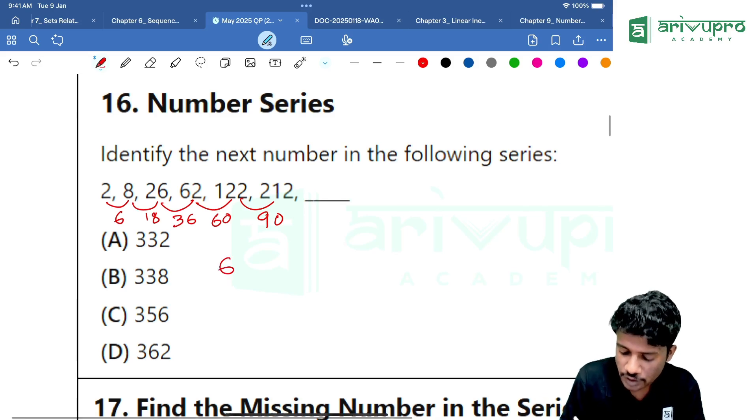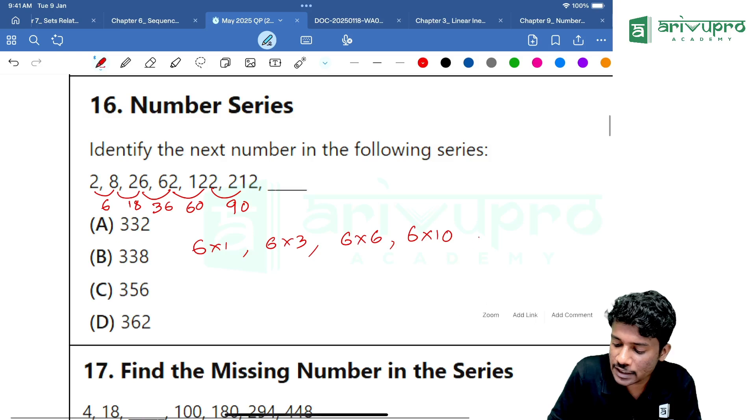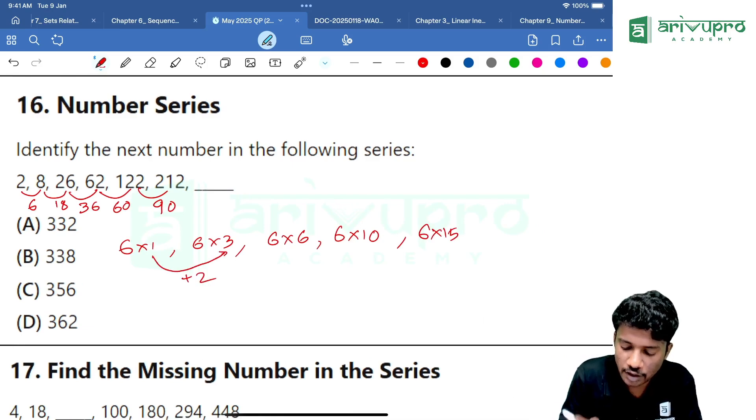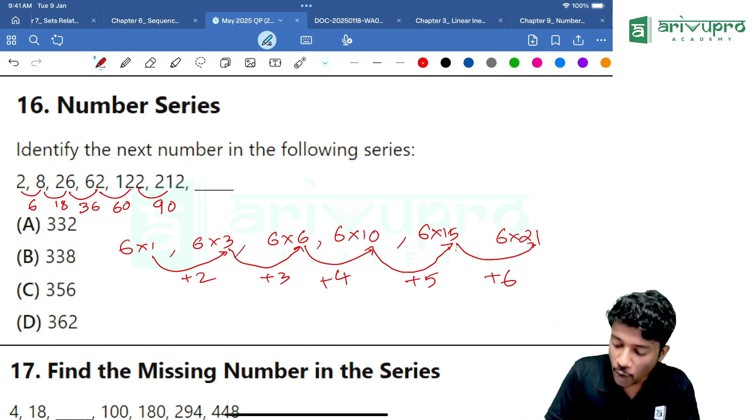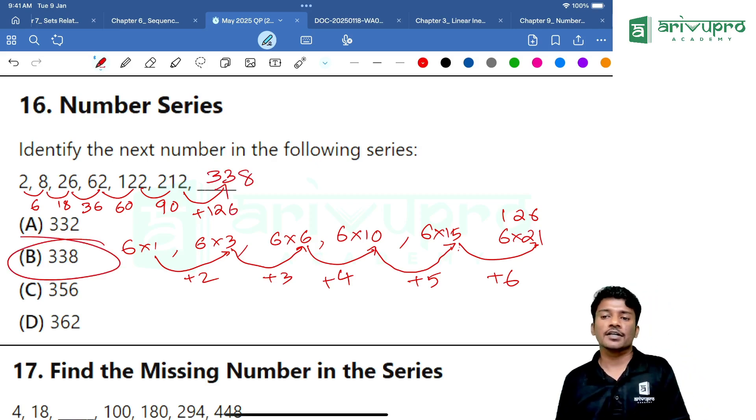We can write 6 as 6 into 1, then 18 as 6 into 3, then 36 is 6 into 6, then 60 is 6 into 10, then 90 is 6 into 15. 1 is becoming 3 plus 2, then 3 is becoming 6 plus 3, 6 is becoming 10 plus 4, 10 is becoming 15 plus 5. Then next number should be plus 6, that means 6 into 21. 6 into 21 is 126. That means answer is plus 126. Answer is 338. Option B is your answer.